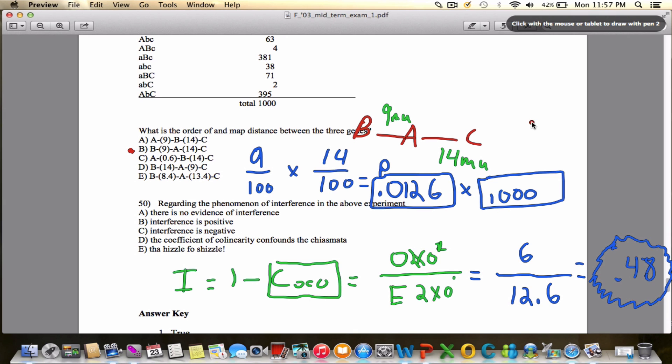So when we plug that into interference, I'll do that in green up here, we have I is equal to 1 minus 0.48. Well, you don't have to be a mathematician to know that if you do that, you're going to get a positive value. So interference in this context is about 0.5.